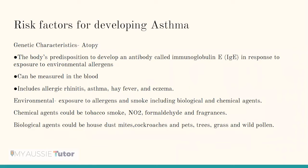Risk factors for developing asthma include genetic characteristics — that is, atopy, where the body is predisposed to develop an antibody called immunoglobulin E (IgE) in response to exposure to environmental allergens. This can be measured in the blood and is associated with allergic rhinitis, asthma, hay fever, and eczema. Environmental factors include exposure to allergens and smoke including biological and chemical agents. Chemical agents could be tobacco smoke, NO2, formaldehyde, and fragrances. Biological agents could include house dust, mites, cockroaches, pets, trees, grass, and wild pollen.